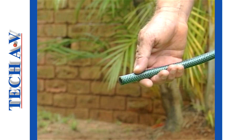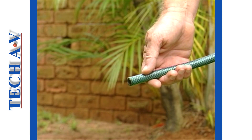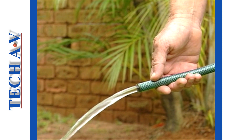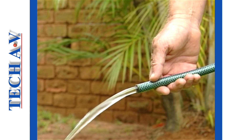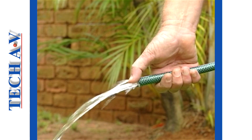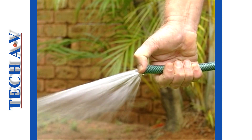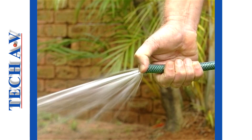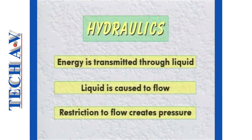A simple demonstration to help you understand this can be shown with a garden hose. When you turn on the tap, water will flow unrestrictedly out of the hose. However, if you partially block the outlet with a thumb or finger, you cause a restriction to the flow and the water will spray with considerable force. To summarize: hydraulic systems operate because power or energy can be transmitted through a liquid when caused to flow, and pressure is created when there is a restriction to that flow.